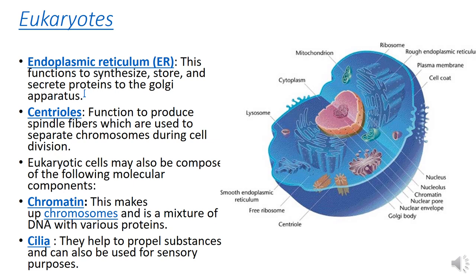The rough endoplasmic reticulum and smooth endoplasmic reticulum function to synthesize, store, and transfer proteins to the Golgi apparatus. The centriole functions to produce spindle fibers, which are used to separate chromosomes during cell division.